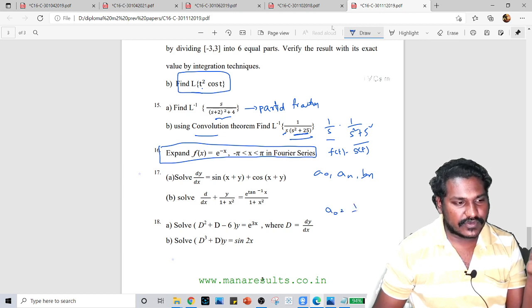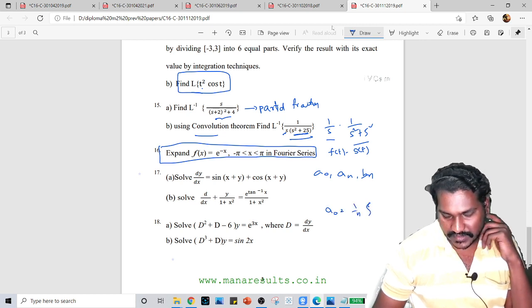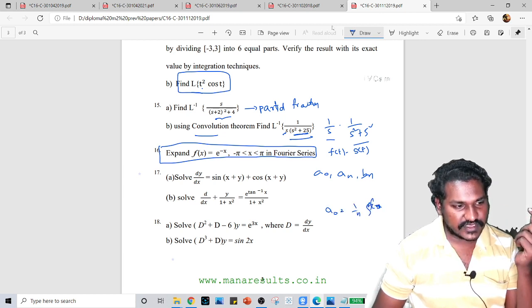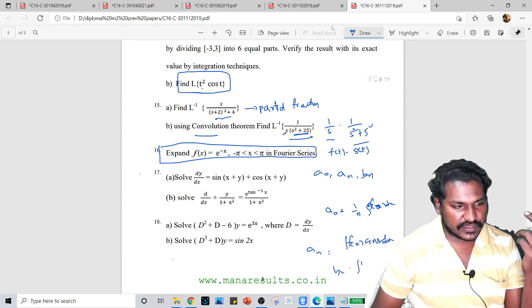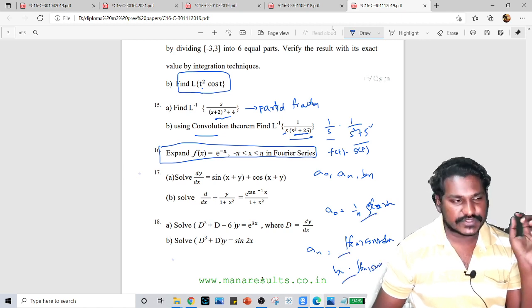A0 is equal to 1 by n times the integral of f(x)dx, an is equal to the integral of f(x)cos(nx)dx, and bn is the integral of f(x)sin(nx)dx. It is the formula of A0, an, and bn.